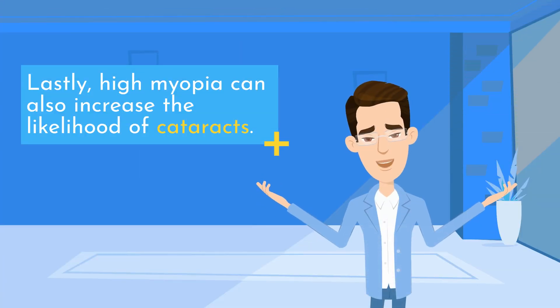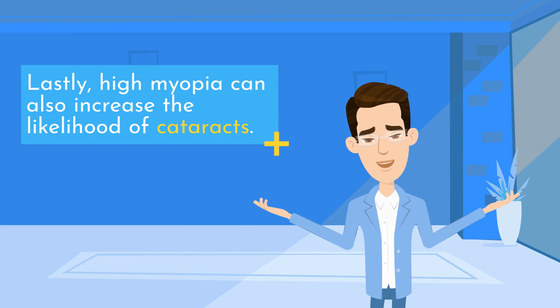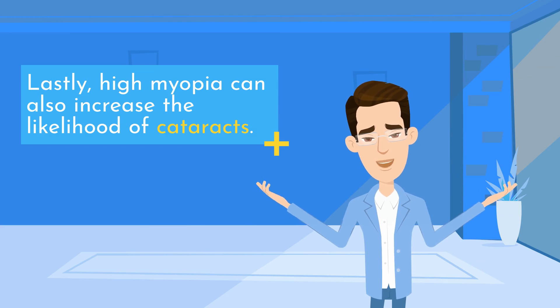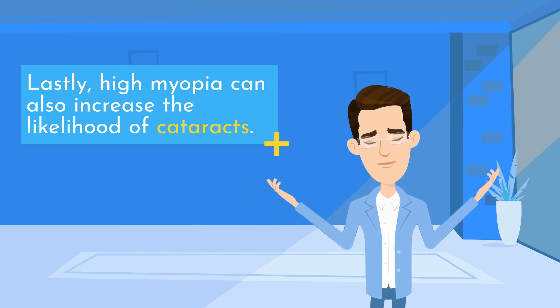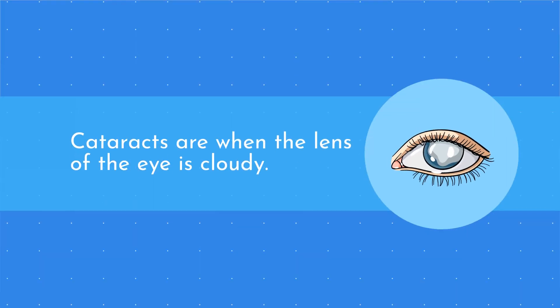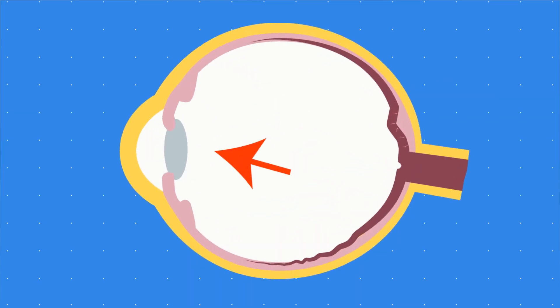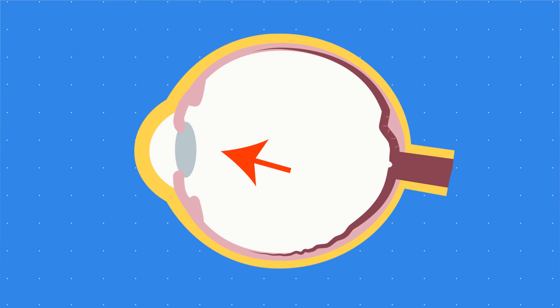Lastly, high myopia can also increase the likelihood of cataracts. Cataracts are when the lens of the eye is cloudy. This happens because the thinning of the retina may lead to insufficient nutrients delivered to the lens, and the stretched eye may lead to the release of biochemical byproducts.